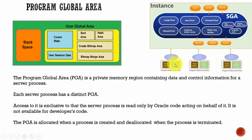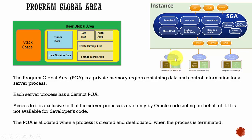Access to this Program Global Area is purely restricted to the server process. This PGA is allocated whenever the server process is created and is deallocated whenever the process is terminated.